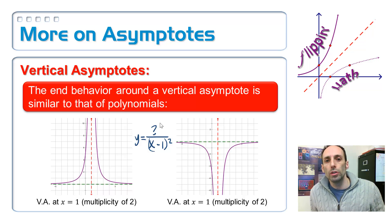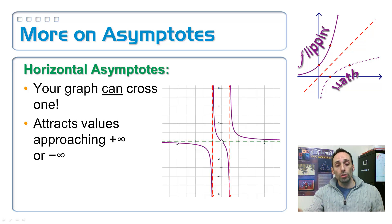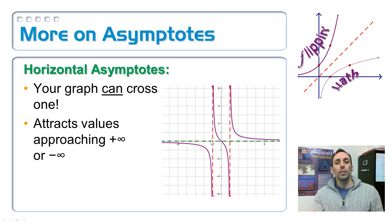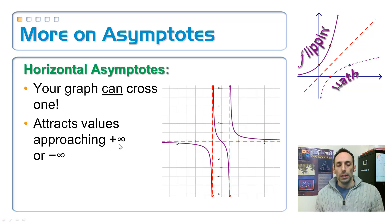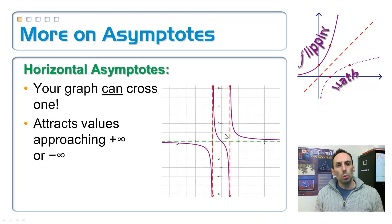Now let's talk about horizontal asymptotes. Your graph can cross one of these. Take a look at that picture — it crosses right here at the origin. You can cross a horizontal asymptote if you're having to pass through it in order to get to an x-intercept. Remember that the horizontal asymptote only really comes into play when x goes to positive or negative infinity. So it's weak around the origin but gets really strong out on the ends — that's where it starts attracting.